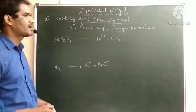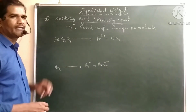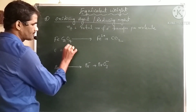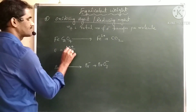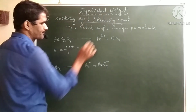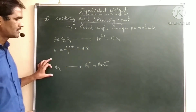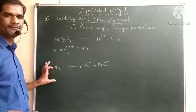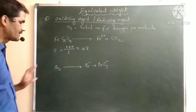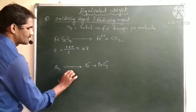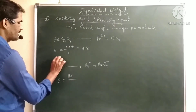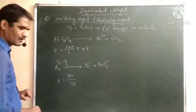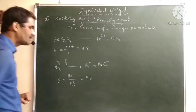For ferrous oxalate undergoing oxidation to Fe³⁺ and CO₂, the molecular weight is 144 and overall n-factor is 3, giving equivalent weight 48. For bromine undergoing both oxidation and reduction simultaneously — a disproportionation reaction — the molecular weight is 160 and n-factor for bromine is 5/3. Writing 160 divided by 5/3, the overall equivalent weight is 96.